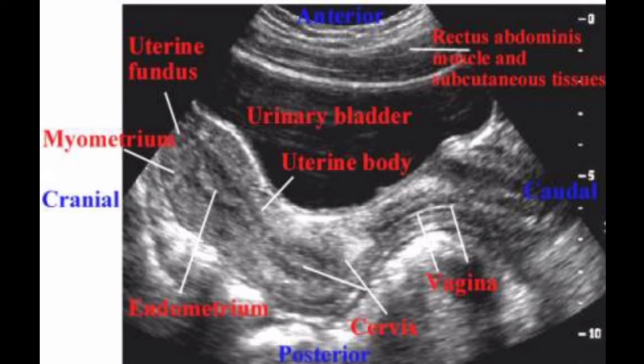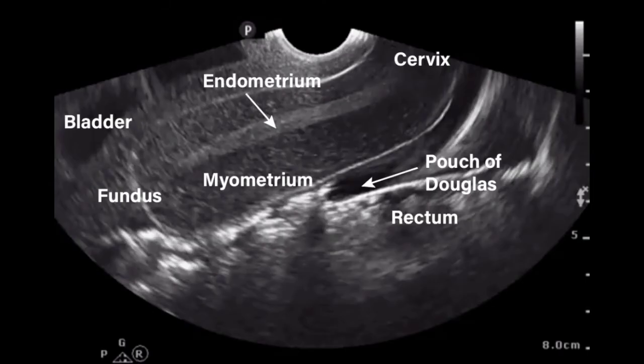Anatomically, the uterus lies between the bladder anteriorly and the rectosigmoid colon posteriorly. The uterus is divided into two major parts, the body and cervix. The most superior aspect of the uterus is referred to as the fundus, and the entrances of the fallopian tubes into the uterus are referred to as the cornua.